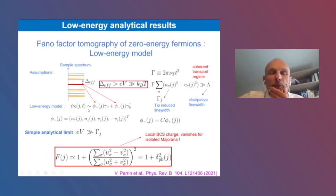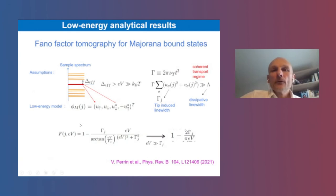What we found in the limit where the voltage is larger than hybridization is that the Fano factor, which is spatially dependent now at atomic resolution, can be expressed in a very simple manner. It's one plus a term, which is just the local BCS charge squared. In other words, the particle-hole asymmetry. And it exactly cancels for Majorana bound states. So we do expect the Fano factor to be one, whatever the position for the Majorana bound states.